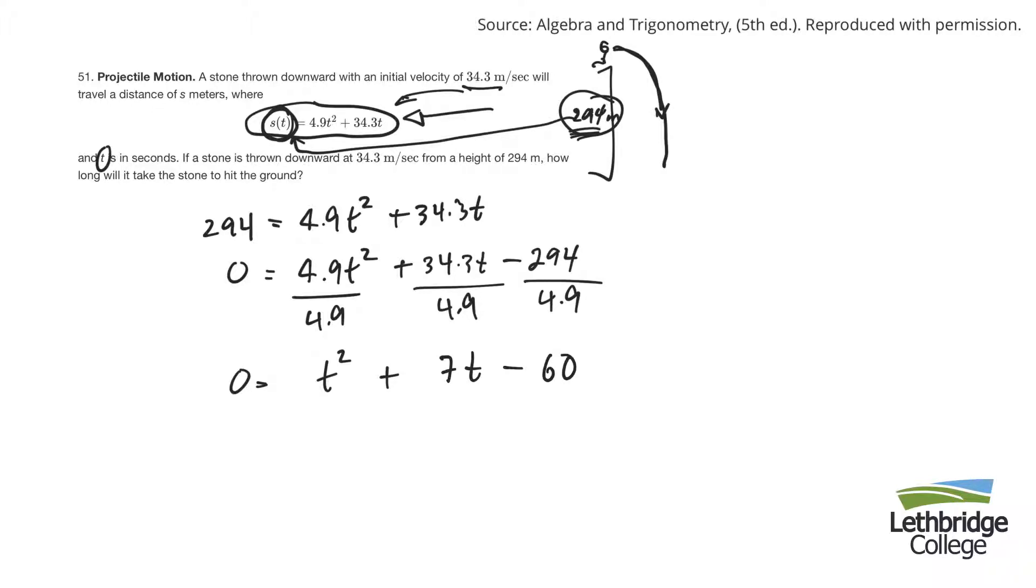Now it's a quadratic, so I can try and factor it. I've got a 1 there in front of the T, so I can try and factor it. So T and T, things that multiply to 60, 12 and 5 maybe. Yeah, that multiplies to 60. Maybe positive 12, negative 5.